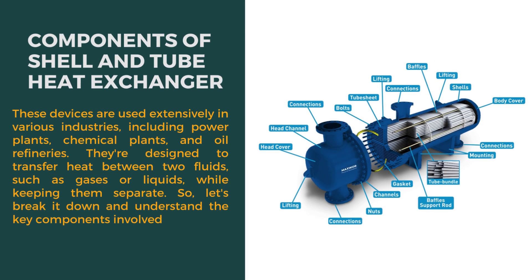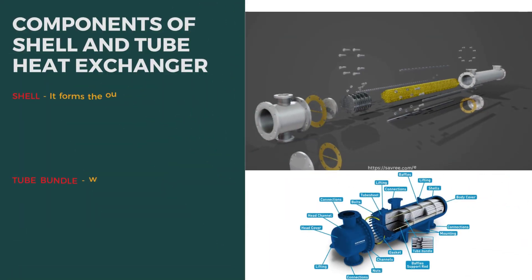We will now take a closer look at the components that make up a shell and tube heat exchanger. These devices are used extensively in various industries, including power plants, chemical plants, and oil refineries. They are designed to transfer heat between two fluids, such as gases or liquids, while keeping them separate. So let's break it down and understand the key components involved.